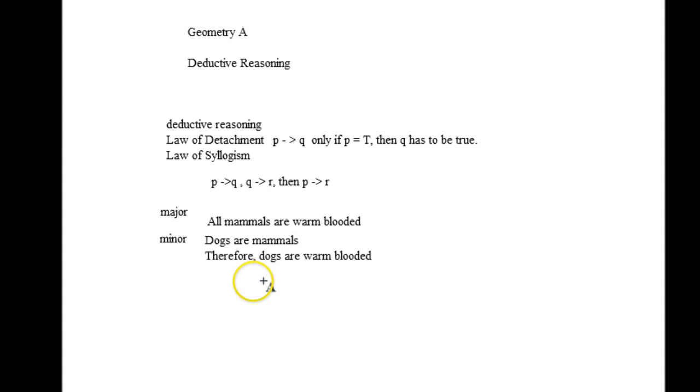And then you come up with a minor subset of that. And then you base your logic off that. So all mammals are warm-blooded. Dogs are mammals. Therefore, dogs are warm-blooded is the logical conclusion.